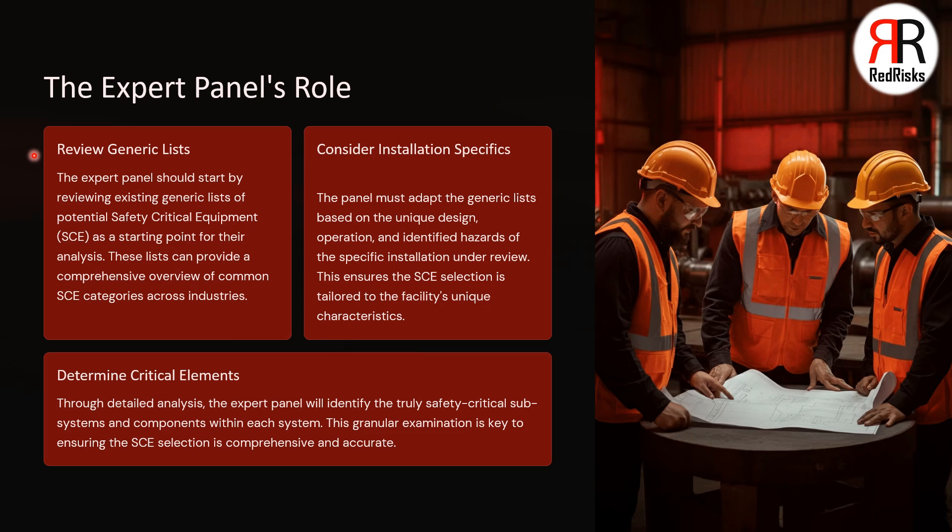These lists can provide a comprehensive overview of common safety critical equipment categories across industries. The panel may also adapt the generic list based on the unique design, operation, and identified hazards of the specific installation under review. This ensures the SCE selection is tailored to the facility's unique characteristics. The expert panel will also identify the truly safety critical subsystems and components within each system, ensuring the SCE selection is comprehensive and accurate.